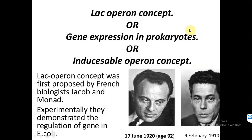Now talking about the LAC operon concept, also called gene expression in prokaryotes or the inducible operon concept. The lac operon concept was first proposed by French biologists Jacob and Monod. These two scientists experimentally demonstrated the regulation of genes in E. coli. E. coli is used because it reproduces very quickly, making it ideal for biological experiments. The lac operon is about how gene regulation works in different environments using lactose presence and absence.